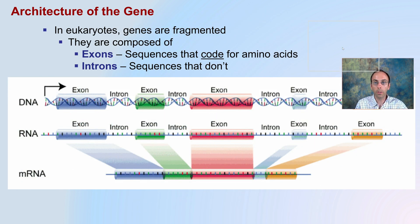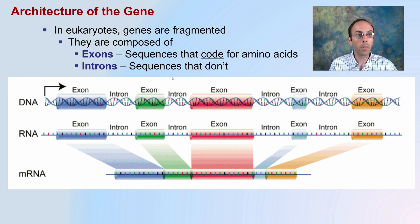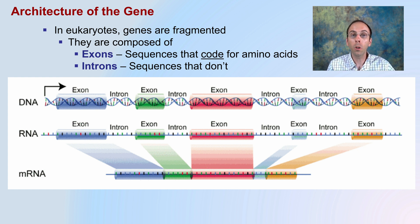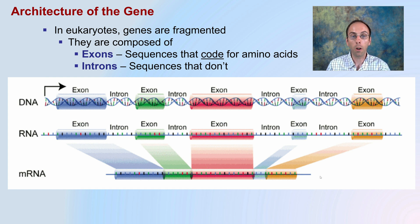Now, looking at the architecture of a gene in general — how do they look? We have that DNA, and speaking here in eukaryotes, genes are basically fragmented and composed of two components: exons and introns. The exons are sequences that code for amino acids, and the introns don't have any coding regions. So from our DNA going to RNA and mRNA, we want to take that full-length DNA composed of exons and introns, but only the exons are kept in the final messenger RNA.